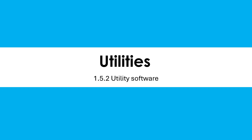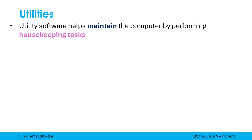We've looked at operating systems as one of our examples of systems software, and the other main example of system software are utilities. Utility software are programs which help maintain the computer by performing housekeeping tasks. The phrase 'housekeeping tasks' isn't one I particularly like, but it's what OCR often use in mark schemes and the specification. Housekeeping in real life refers to cleaning jobs you do to maintain a house, and utilities do the equivalent jobs on a computer system — unglamorous jobs which help look after it and ensure it's running smoothly over time.